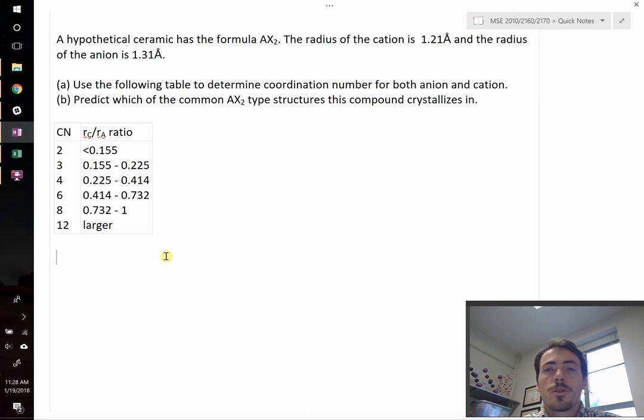For this question we're told the following: A hypothetical ceramic has the formula AX₂. The radius of the cation, the A ion, is 1.21 angstroms and the radius of the anion, the X ion in the formula, is 1.31 angstroms. We are asked to use the following table to determine the coordination number for both anion and cation, and predict which of the common AX₂-type structures this compound crystallizes in.